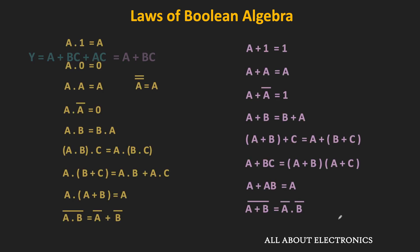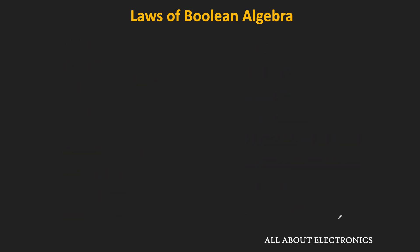Here is the list of some Boolean laws. Most of them are pretty straightforward to understand and all these laws can be proved using the truth table. So one by one let us understand them. The first one is a·0 = 0, meaning the AND operation of a and 0 is equal to 0.